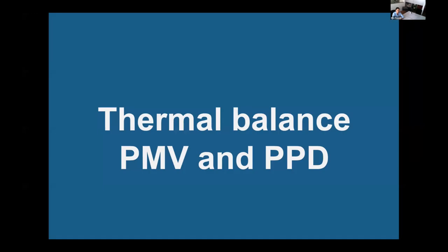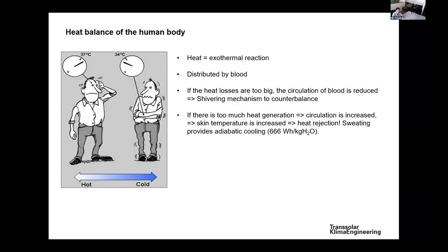To understand thermal comfort, we also have to understand the physiology behind it. The heat balance of the human body is driven by exothermal reactions. Heat is generated internally and distributed by your blood. If you have too much heat loss, you'll have reduced blood circulation. To counterbalance this, your body has a shivering mechanism — your muscles contract, which enhances blood circulation and generates more heat.